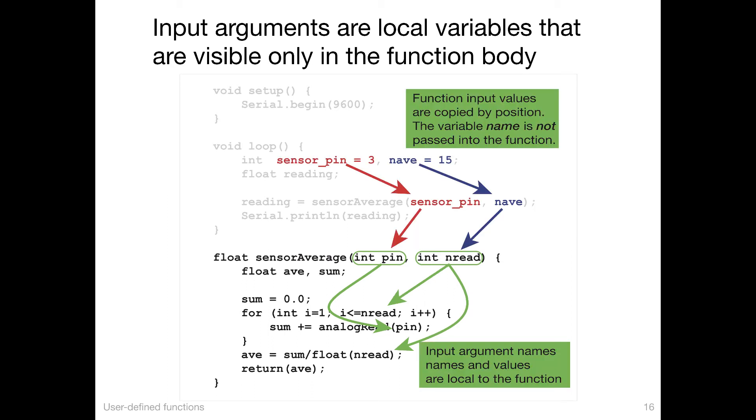When the function is called, the names of the variables do not need to be the same. The way to think about this is that the function values are passed by position, the order in which they appear, not their name. So inside the loop function, sensorPin has the value of 3 and nAve has the value of 15. When sensorAve is called, sensorPin is the first argument and nAve is the second argument. Therefore, the value stored in sensorPin is given to pin inside the function. The value in nAve is given to the internal variable nread at the time the function is executed. So pin and nread are available inside the function. They know nothing about the named variable sensorPin or the named variable nAve. They only know the values that were given to the function at runtime.